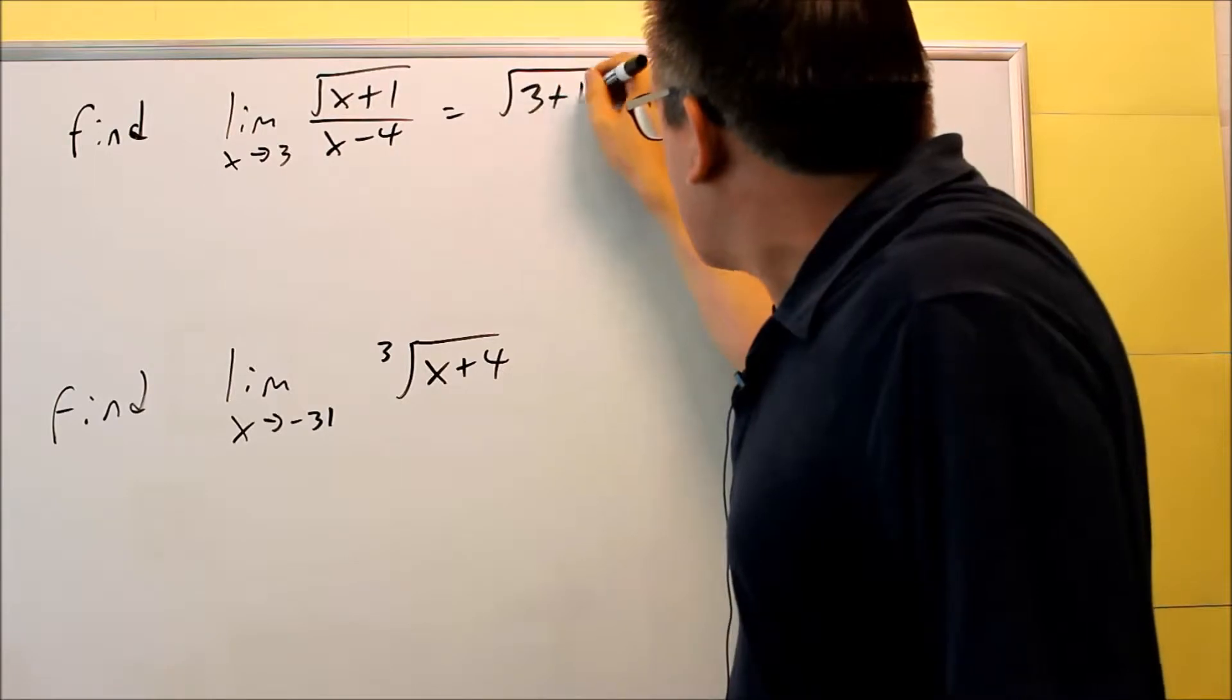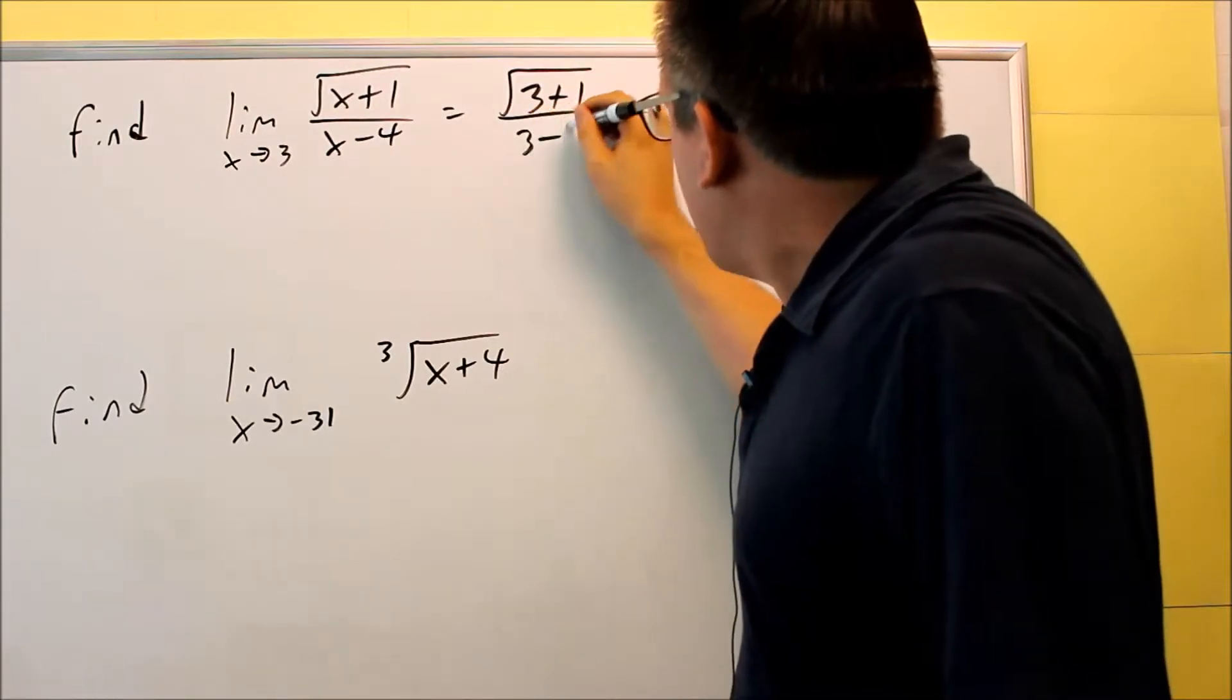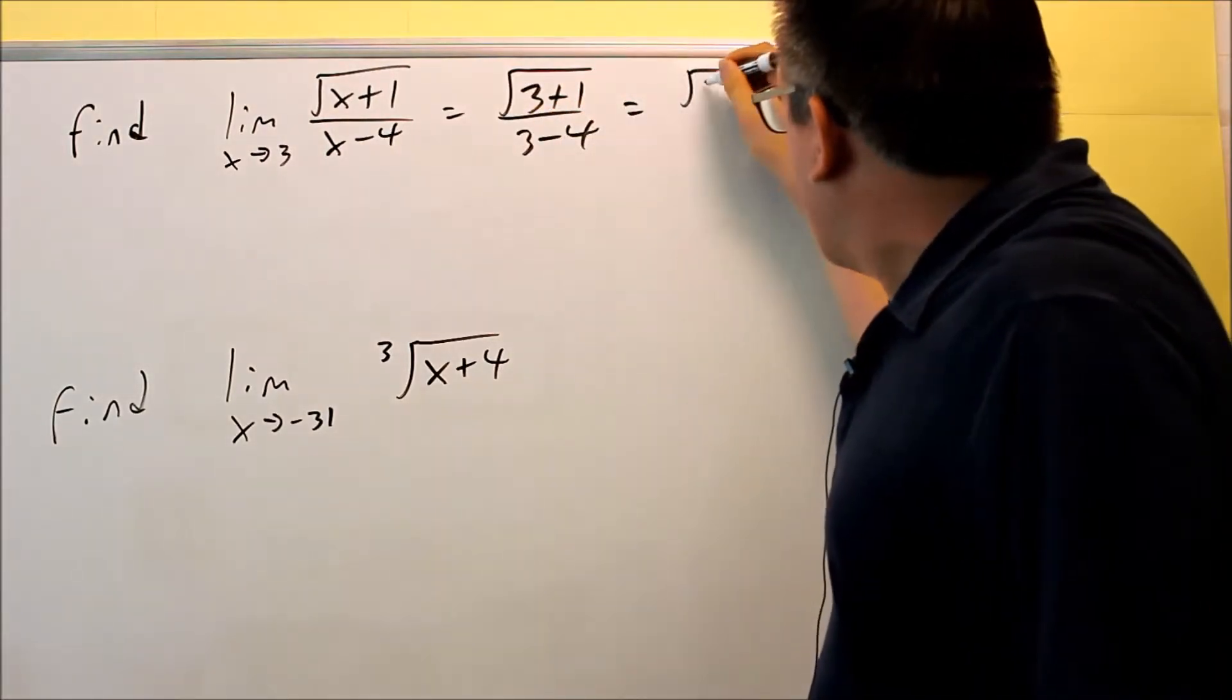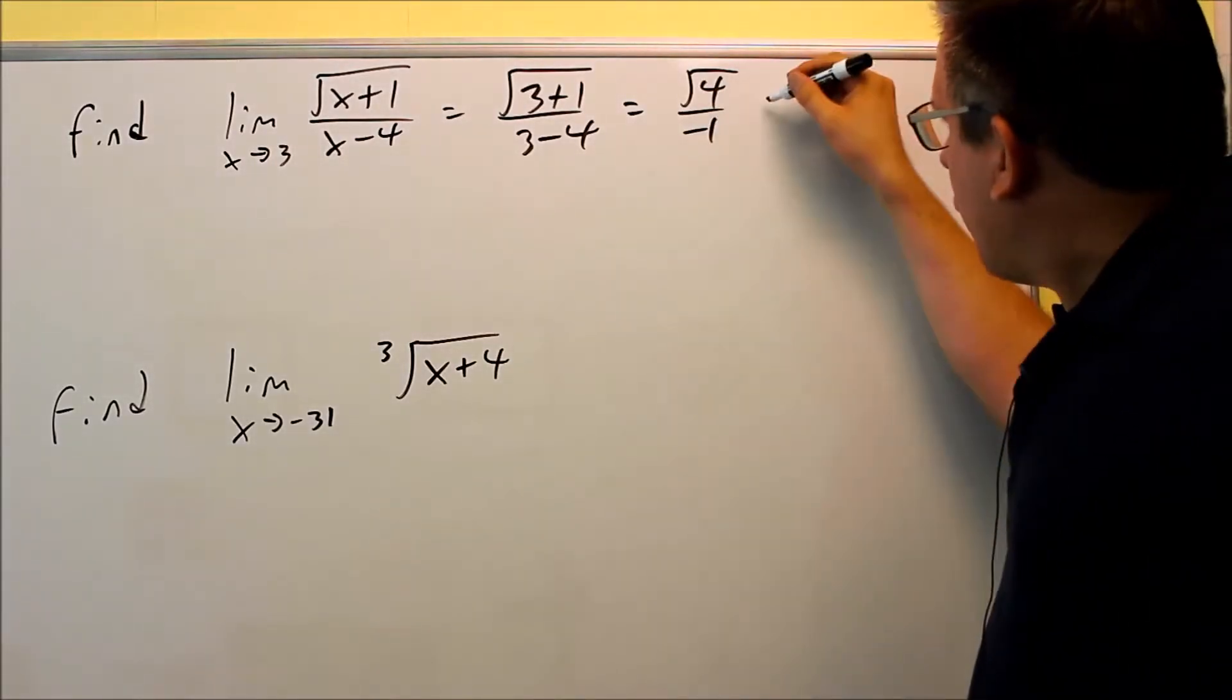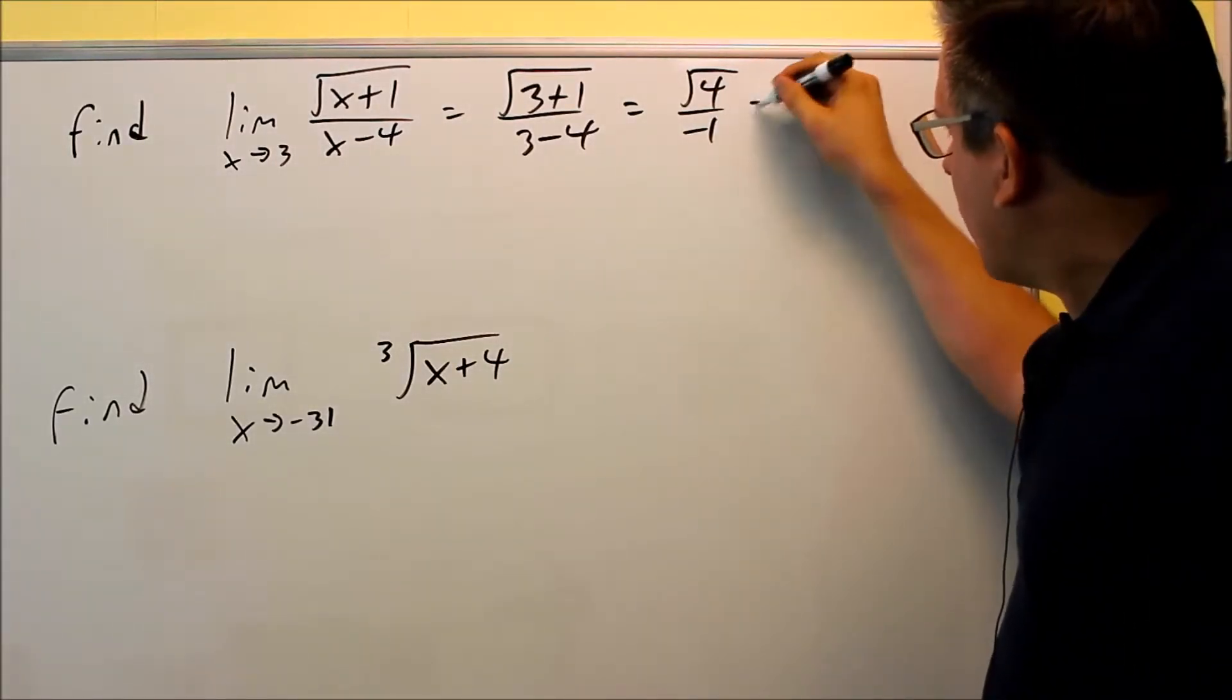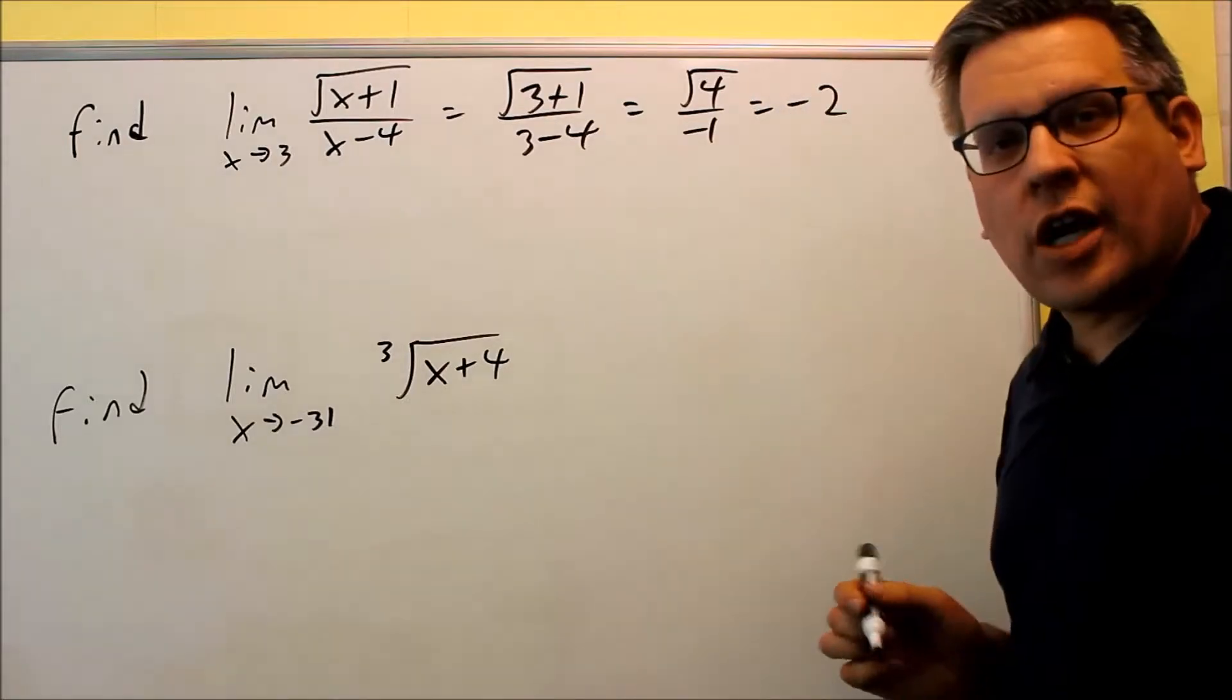Square root of 3 plus 1 over 3 minus 4 means I get the square root of 4 over negative 1. Square root of 4 is 2. Since we're dividing that by negative 1, our answer is going to be negative 2.